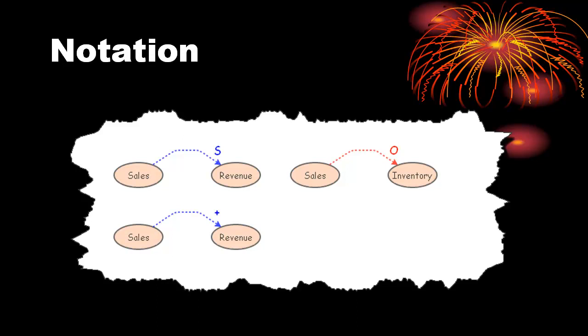In the plus and minus notation, a minus indicates that the source variable subtracts from the destination variable, or a change in the source variable causes a change in the destination variable in the opposite direction. For the relationship between sales and inventory, subtracts from is a more appropriate notation, because as sales decreases, it still subtracts from inventory, though not as quickly. This inconsistency will be sorted out shortly.